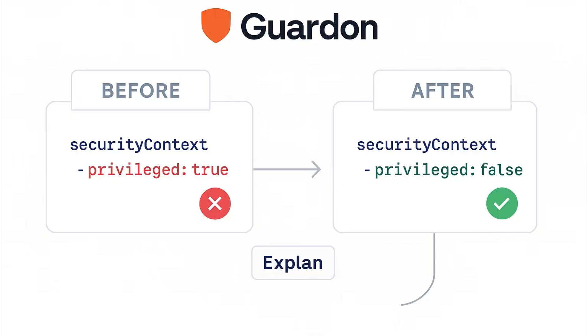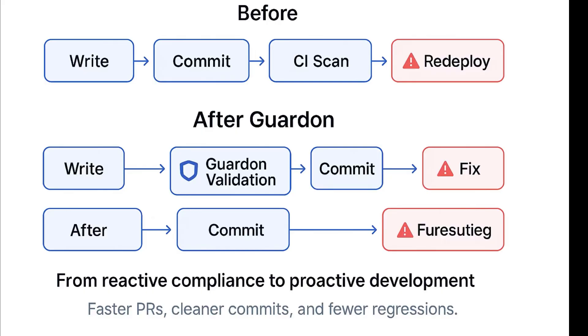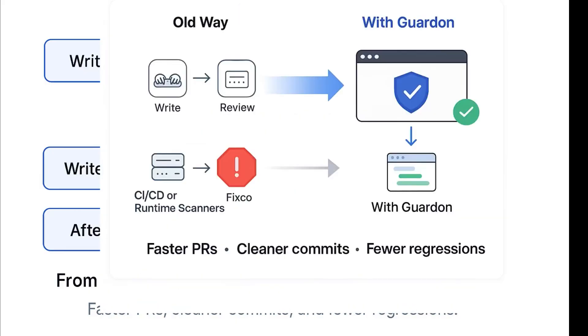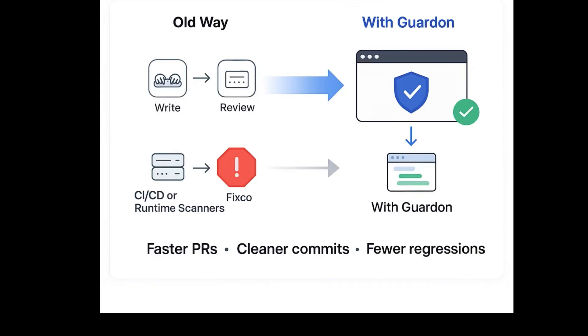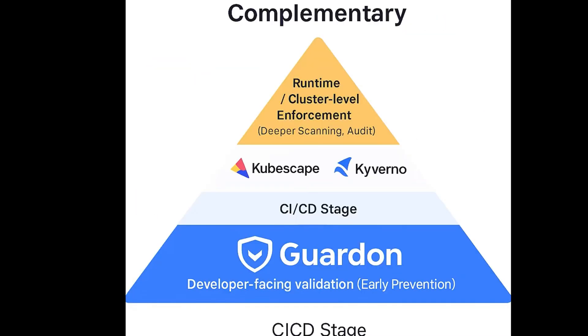This approach transforms how teams think about compliance. Instead of waiting for CI/CD or runtime scanners to point out errors, Gardon empowers developers to fix issues as they write and review code — that means faster pull requests, cleaner commits, and fewer security regressions without interrupting the developer flow. Gardon isn't here to replace tools like Kubescape or Kyverno — it complements them. Those tools remain essential for deep cluster-level enforcement, runtime scanning, and auditing. But Gardon focuses on the earliest, developer-facing stage — the point where prevention is easiest and cheapest. Working hand-in-hand with existing systems, it helps teams achieve full lifecycle compliance from developer desktop to production cluster.